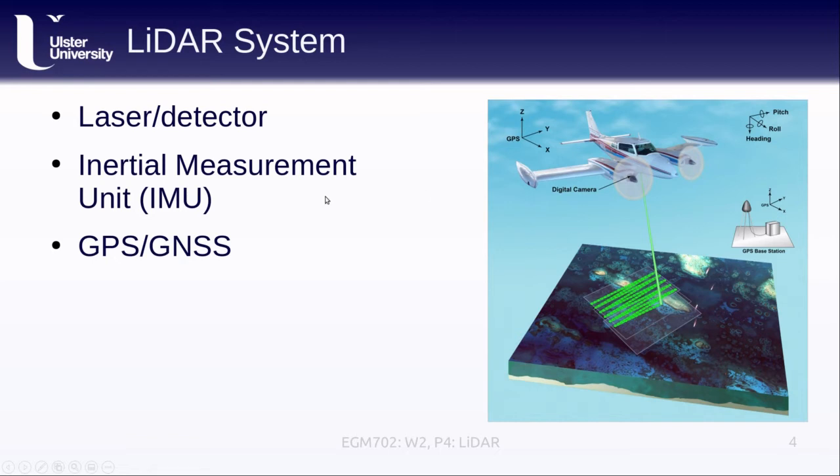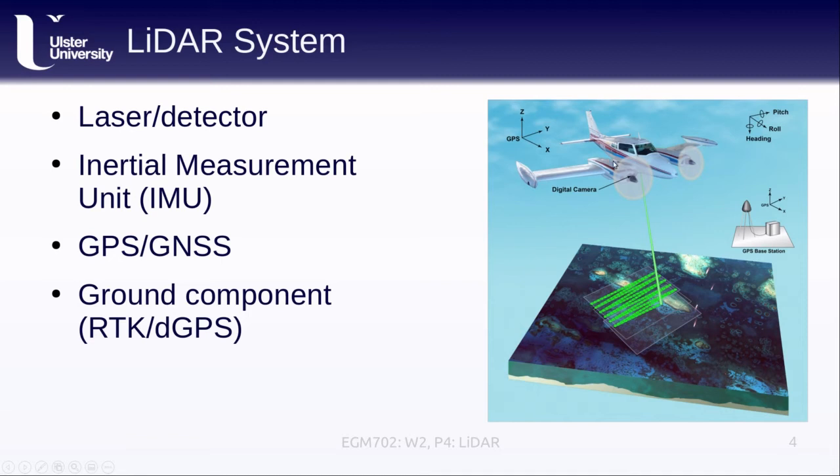We also have a GPS or GNSS component so that we can actually get the 3D position of the sensor in time. With the combination of the 3D position as well as the pointing direction, we can actually get the 3D location of all of the points that we're observing. And usually this also means we have some ground component, either real-time kinematic GPS or differential GPS, where we have some GPS base station that we can do post-processing on to get more accurate GPS or GNSS locations.